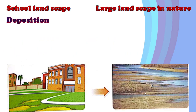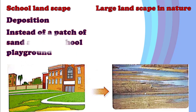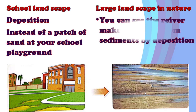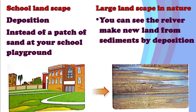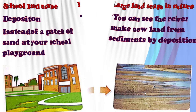You can see a patch of sand in your school playground as an example of deposition. Instead of this small-scale example, in nature you can see a river making new land formed from sediments by deposition along its borders.